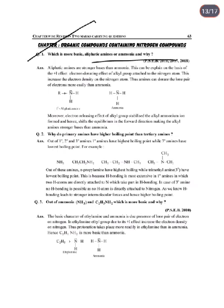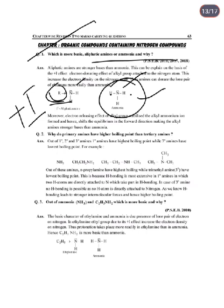Next chapter: Organic Compounds Containing Nitrogen. Which is more basic — aliphatic amine or ammonia? In aliphatic amines, the alkyl group (R) has a +I electron-releasing inductive effect, which increases the electron density on nitrogen, making the lone pair more available. Hence, aliphatic amines are stronger bases than ammonia. The electron-releasing effect of the alkyl group stabilizes the alkylammonium ion formed and shifts the equilibrium forward, making aliphatic amines more basic than ammonia.